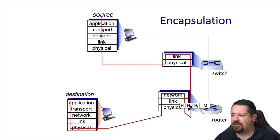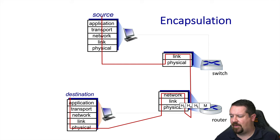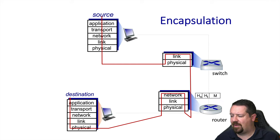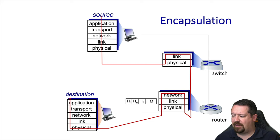Network devices only function at certain layers of the stack. For example, a switch is commonly referred to as a layer two device, meaning it only processes the link layer and none of the higher layers. A router is a layer three device — it processes the physical, link, and network layers before forwarding the packet. To do this, it must decapsulate, meaning remove the link layer in order to pass the datagram to the network layer and process it, then forwards it and must re-encapsulate it in the link layer again.